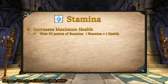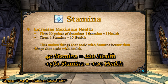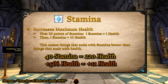Stamina increases your health pool. The first 20 points of stamina only give you one health per point, and every point after that gives you 10. The reason for this is to make things that scale with stamina better than things that scale with max health. For example, if I have 40 stamina, that equates to 220 health. If I have a passive that increases my stamina by 5%, I'd get 2 stamina equating to 20 health, compared to only 11 health from a passive that increases max health by 5%.